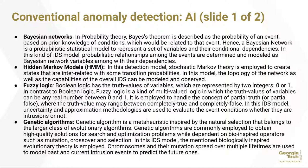Hidden Markov models use stochastic Markov theory to create states that are interrelated with some transition probabilities. In this model, the topology of the network as well as the overall capabilities can be modeled and observed. Fuzzy logic: where Boolean logic has truth values represented by 0 or 1, fuzzy logic uses a multi-valued logic where truth values can be any real number between 0 and 1.